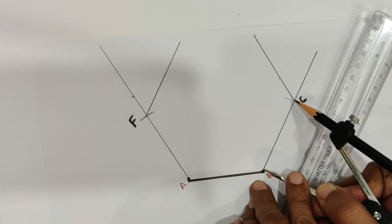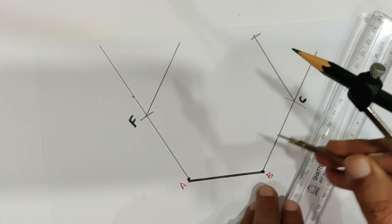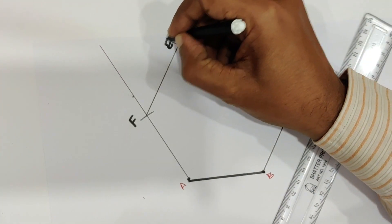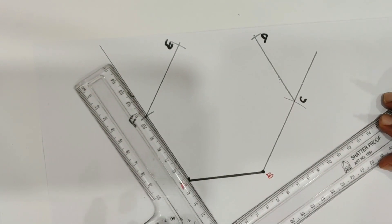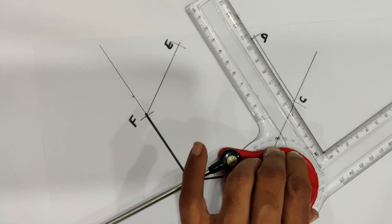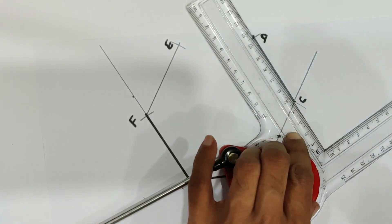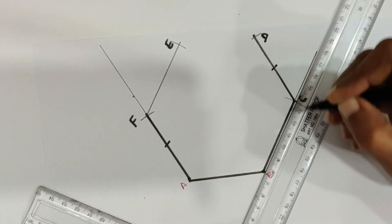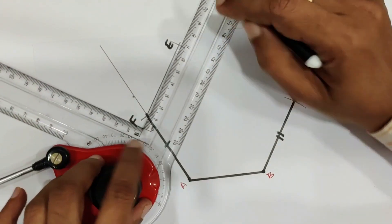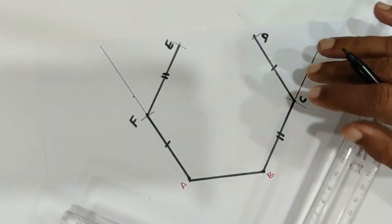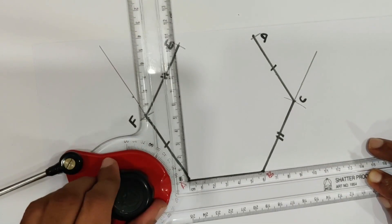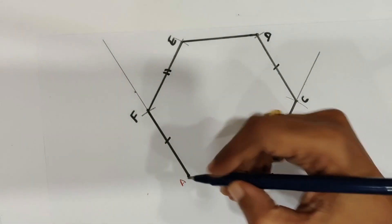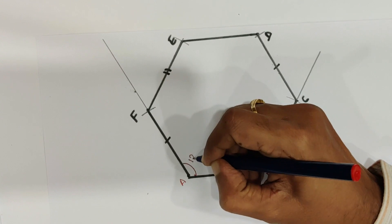Then with BC as radius, draw an arc. With the same radius and F as center, draw another arc. Name this point as D and this one as E. Lines AF and CD are parallel. Then parallel to AB, join E and D. Here the interior angle is 120 degrees.